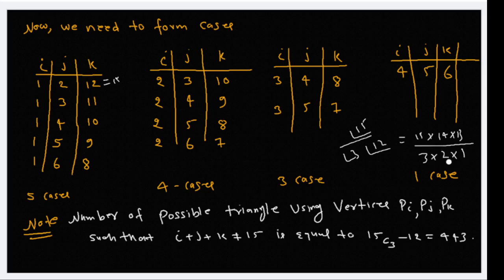Now cancel 15 by 3, which we get 5, and 14 by 2, which we get 7. Then multiply 5 into 7 into 13 and minus 12. So we get 443.